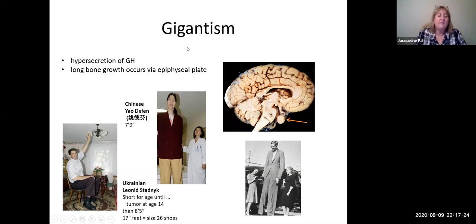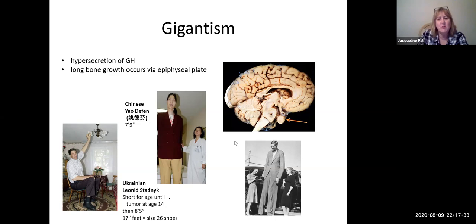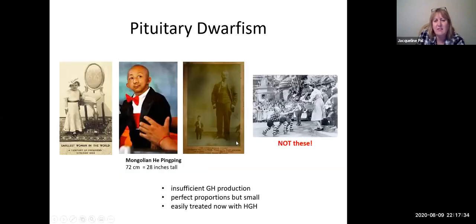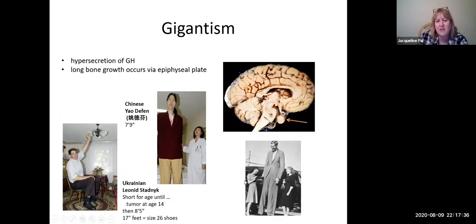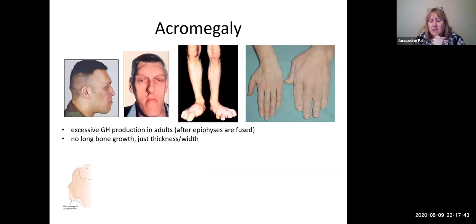At first glance it may seem like not a bad disease to have — you can stand on a chair and change the light bulb — but looking at this picture in the bottom right corner, the dating situation would be less than ideal. Plus there are other diseases associated with it. That is the disease you get if the excess growth hormone occurs before your epiphyseal line closes.